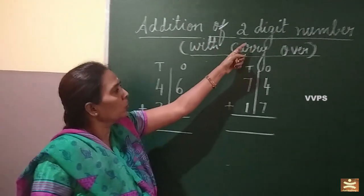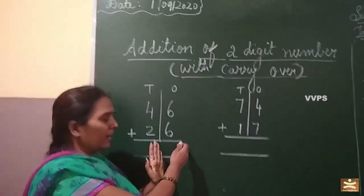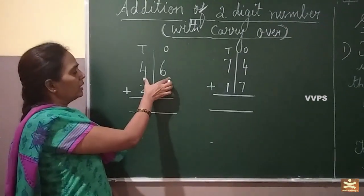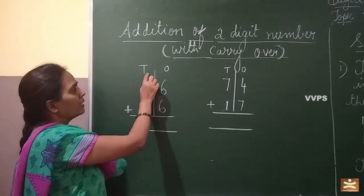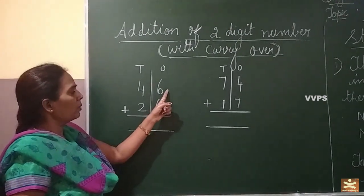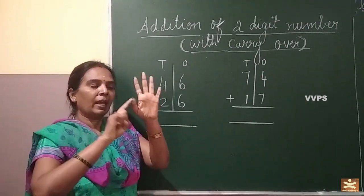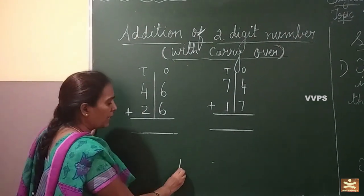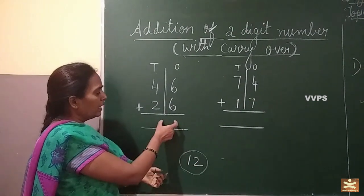Now addition of two digit number with carry over children. So far how you learnt — you will be adding and writing here. So what is this with carry over? Same way you have written one space and ten space. Six in the mind, six on the fingers. After six: seven, eight, nine, ten, eleven, twelve. Now you've got a two digit number in your answer — twelve. So you must not write twelve here as it is — that is wrong.